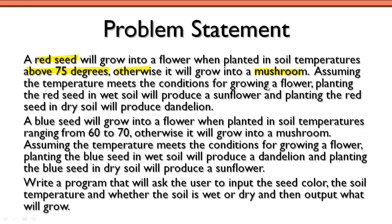Assuming that the temperature meets the conditions for growing a flower, planting the red seed in wet soil will produce a sunflower. And planting the red seed in dry soil is going to produce a dandelion. That's really the main pieces of information from the first paragraph, and being able to pick that out is fairly important.